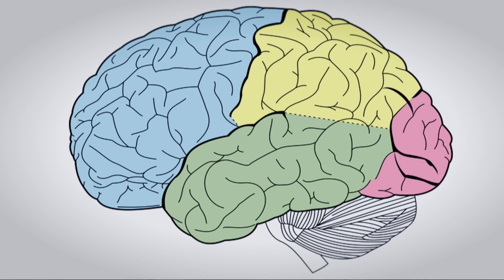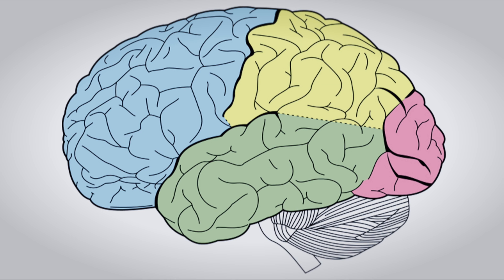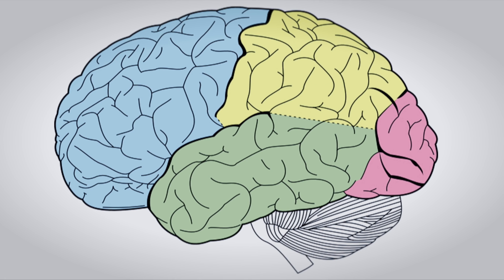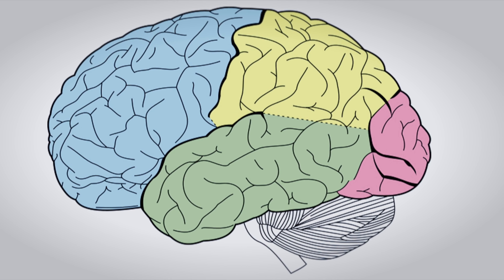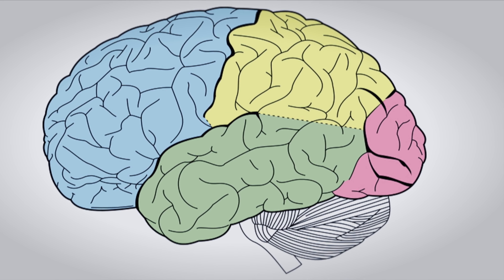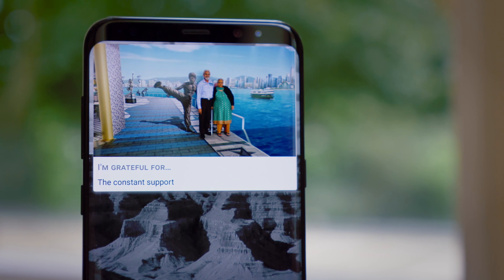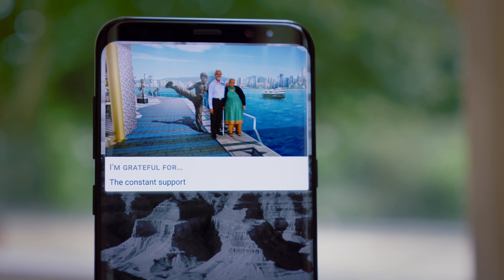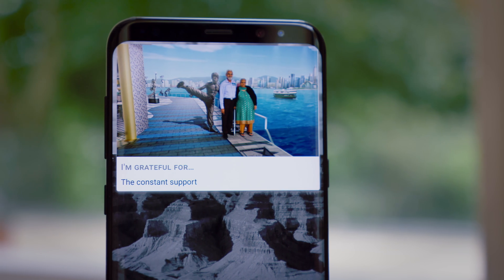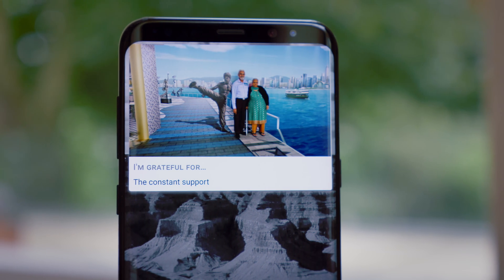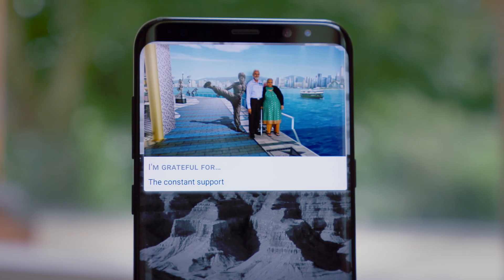The app is based off the idea that the brain is negatively biased — it has a tendency to look at the negatives in life as opposed to the positives. So through notifications and widgets, being constantly shown things you're grateful for should aim to reverse that.